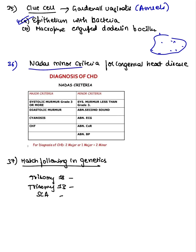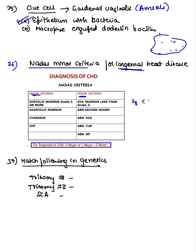Nadas criteria is used for diagnosing congenital heart disease. Diagnosis requires two major criteria, or one major plus two minor criteria. Minor criteria include: systolic murmur less than grade 3, abnormal second heart sound, abnormal ECG — four things are abnormal, and one is less than grade 3.